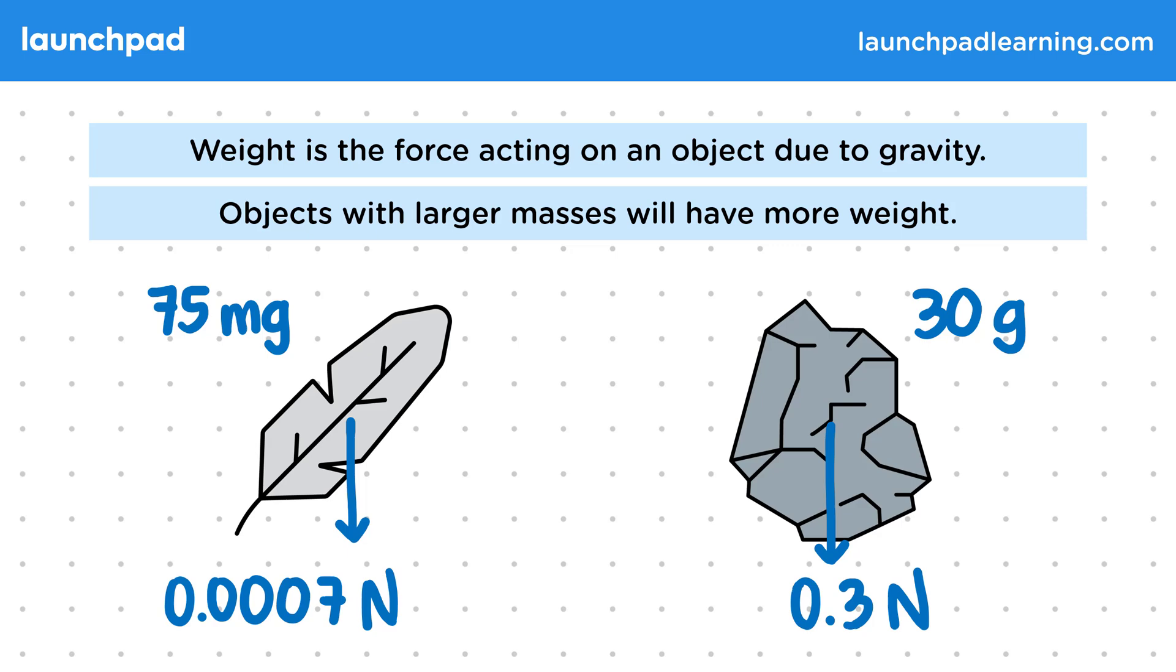So mass and weight are not the same thing, and this is a really common mistake to make in exams. But where in the object does the weight act from?